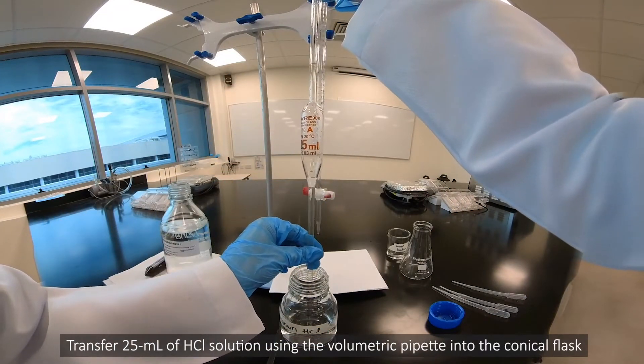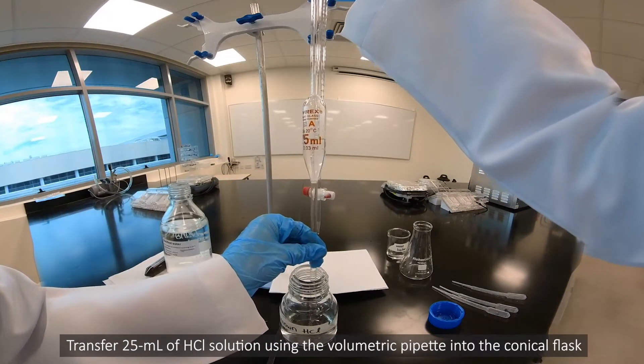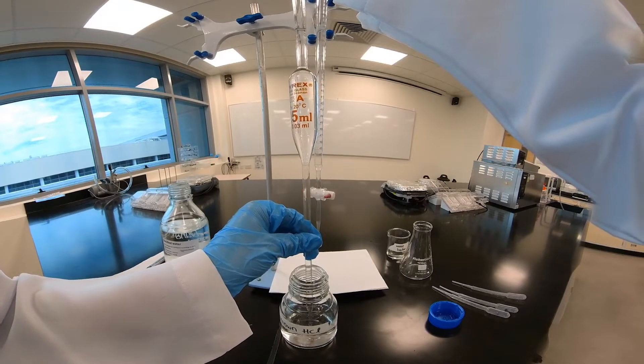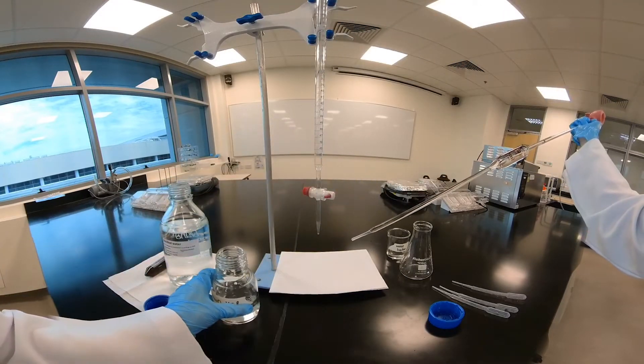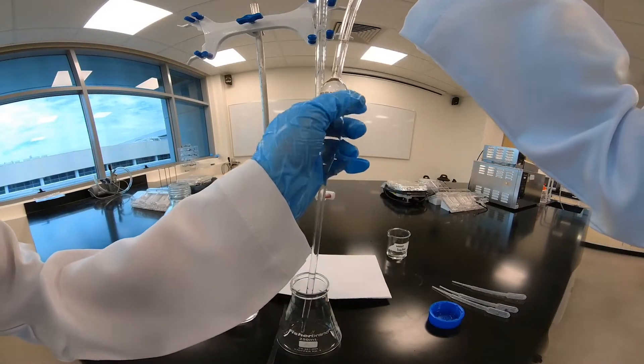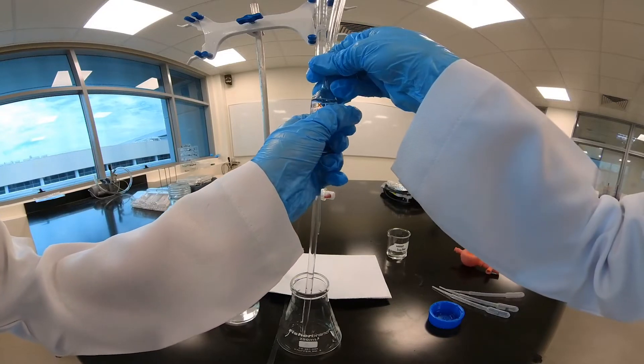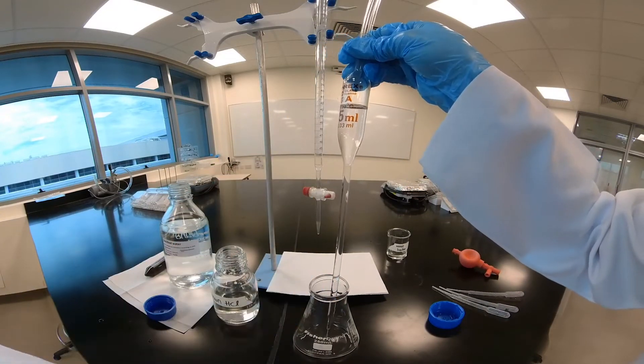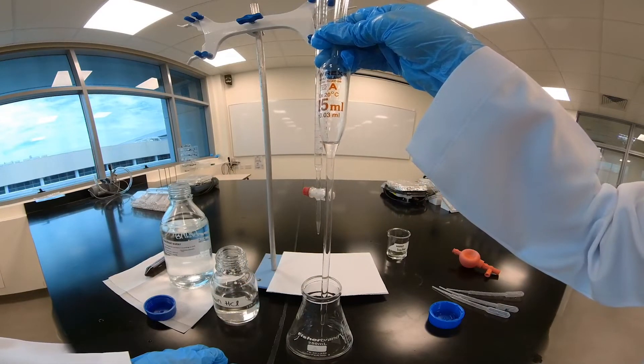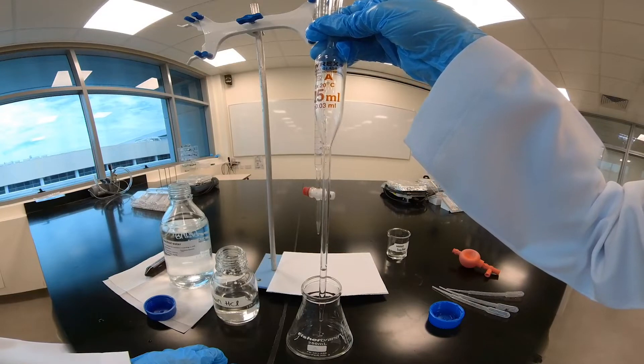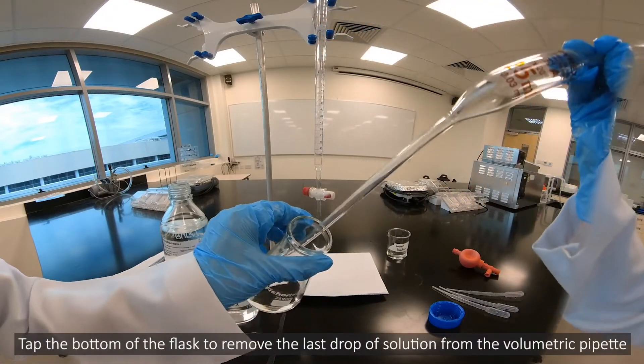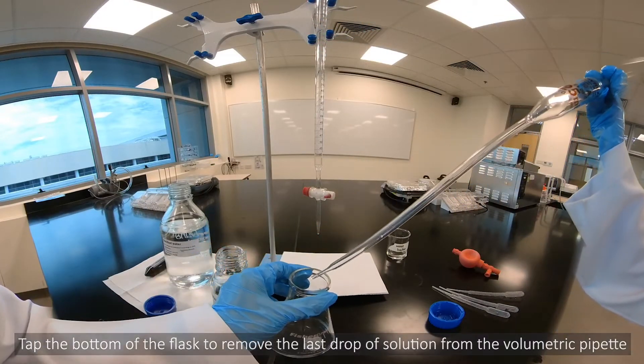Transfer 25 ml of HCL solution using the volumetric pipette into the conical flask. Tap the bottom of the flask to remove the last drop of solution from the volumetric pipette.